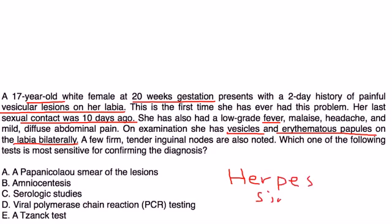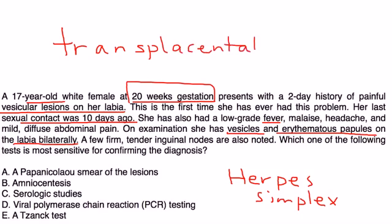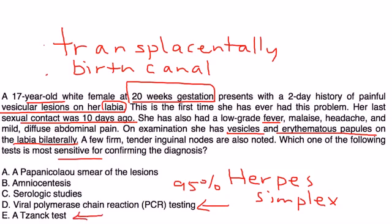Well, she most likely has herpes simplex, and because she's pregnant, this is a particular concern because this can be transferred during birth, actually even before birth transplacentally to the fetus, or during birth when the baby passes through the birth canal. If you notice, the vesicles are on her labia. If it's transferred to the fetus, the fetus can have very high risk of problems such as neurologic disease. The most sensitive of the tests is PCR. It has 95% sensitivity. Tzanck test is also used but it has low sensitivity. So the correct answer for this question is D.